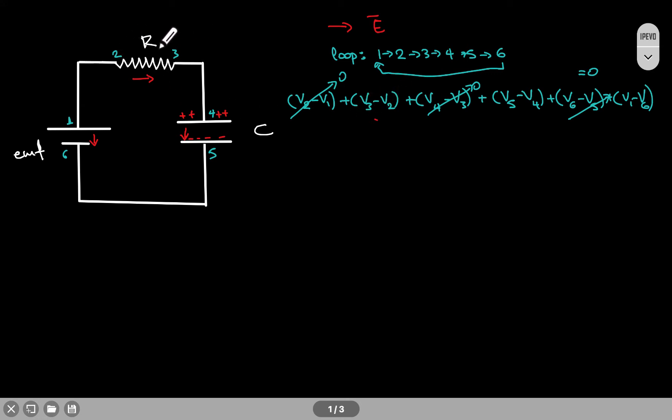Now, from 2 to 3, since the electric field points to the right and I am moving in the same direction, I know that this is going to be a negative number. From 4 to 5, I am moving in the same direction as the electric field, so that will also be a negative number. And then from 6 to 1, I move against the electric field, so that will be a plus.